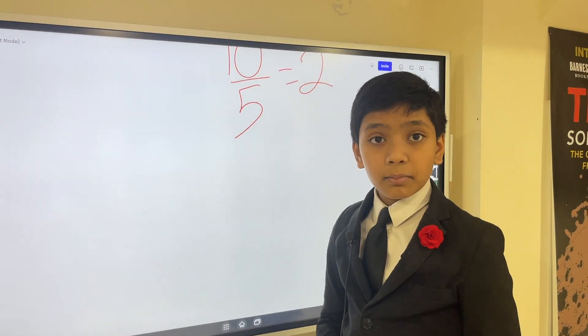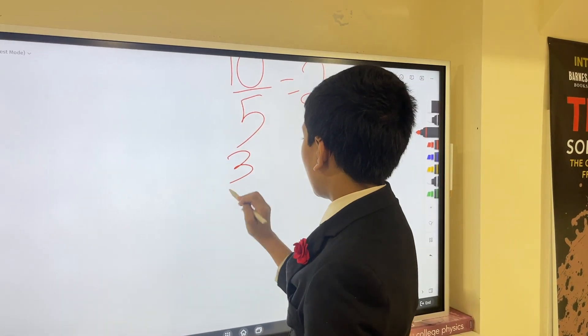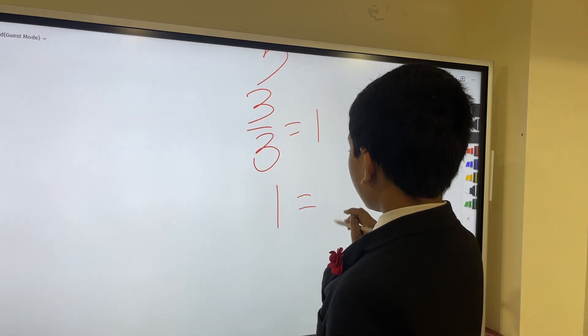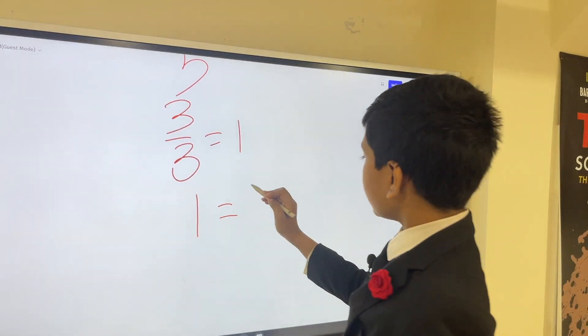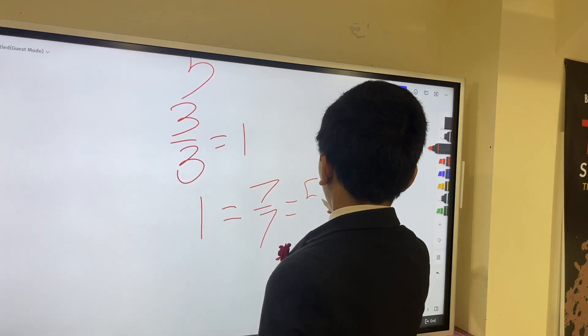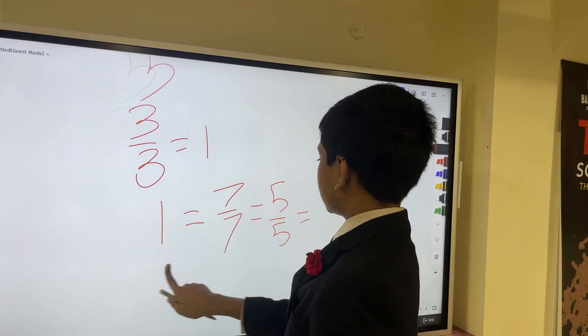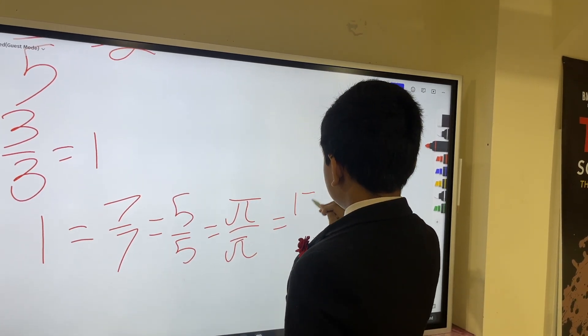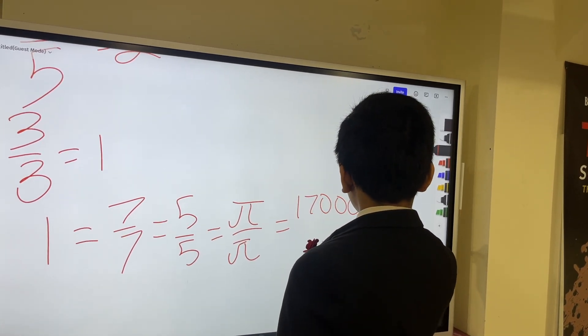So, what we can do is, you know how dividing a number by itself will always give you 1? Well, that means that we can split 1 into any number over itself. Like 1 is 7 over 7, 1 is 5 over 5, 1 is pi over pi, 1 is 17 million over 17 million.